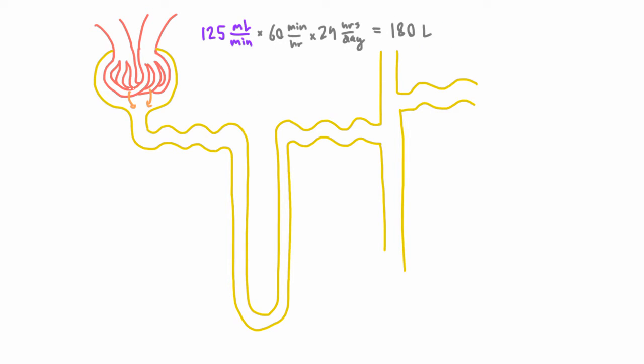So this is how much fluid is filtered every day. And if we want to know how much sodium is filtered every day, we just have to multiply this number by the concentration of sodium in the plasma. So we do 180 liters times the concentration of sodium which is 140 milliequivalents per liter.